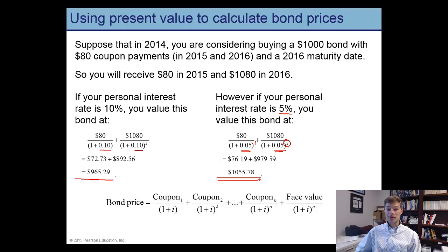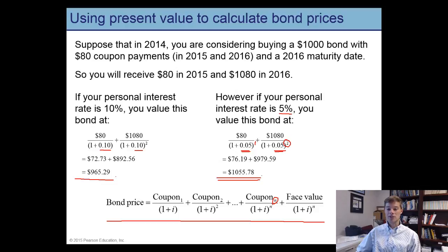Bonds typically provide coupon payments over an extended period of time — more than two years. The formula at the bottom of this slide shows the present value of a bond that makes coupon payments for N years into the future, where N might be 10, 20, or 30 years. Each coupon payment is reduced to its present value, and in the last period the coupon payment is received plus the face value of the bond.